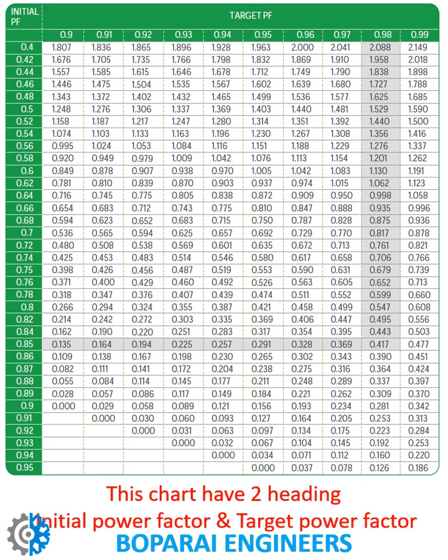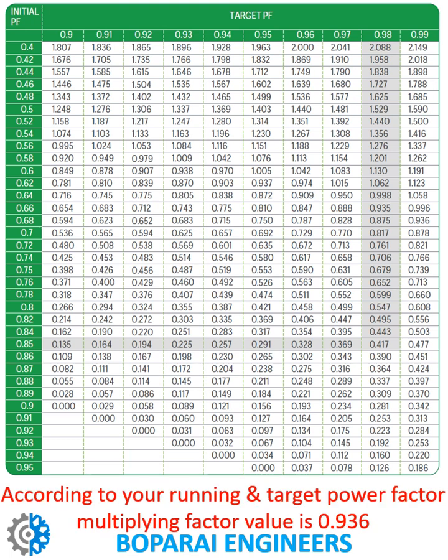This chart has two headings: initial power factor and target power factor. According to your running and target power factor, the multiplying factor value is 0.936.